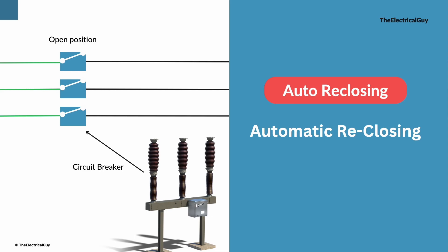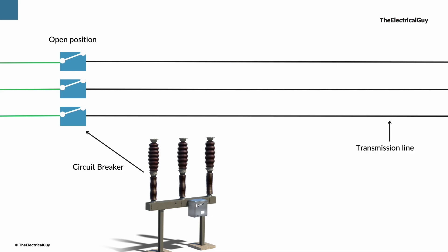In the early days, line operators soon realized that when an overhead line tripped out of service, in the majority of the cases the fault was transient in nature. And this scenario is true for 90 to 95% cases.